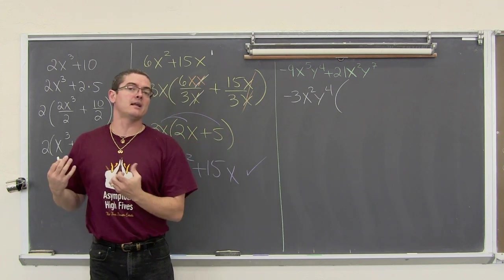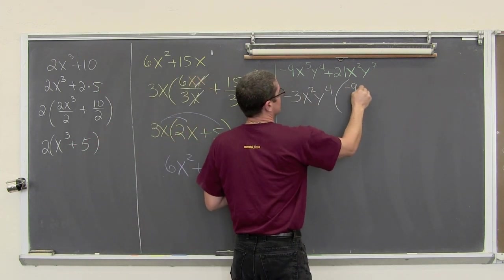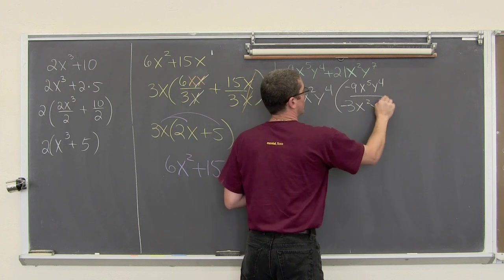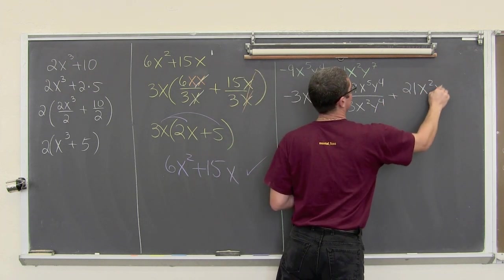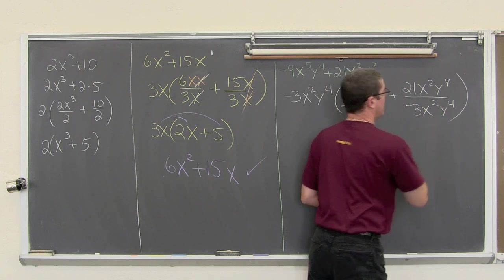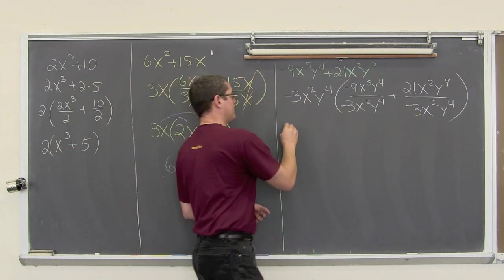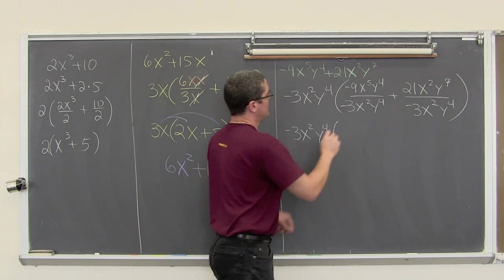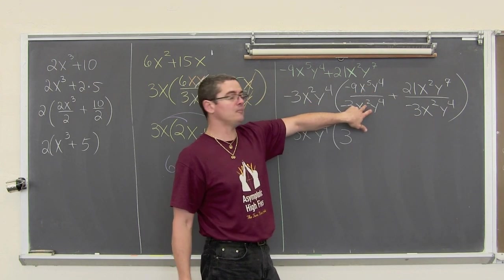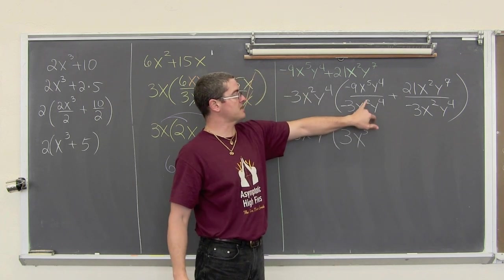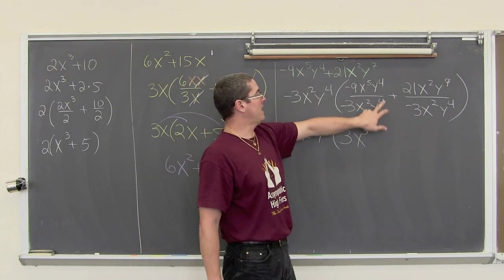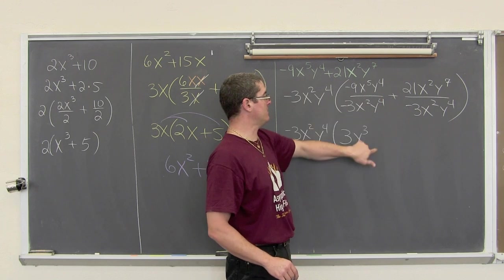And again, we are undistributing or dividing out these GCFs. So, we got negative 9 x to the 5th, y to the 4th, over negative 3x squared, y to the 4th, plus 21x squared, y to the 7th, and we are going to divide that by negative 3x squared, y to the 4th. So, we have negative 3x squared, y to the 4th, negative 9 divided by negative 3 is 3. We have 5 x's, and we are taking 2 of those out, so that is going to leave us with 3. Again, 2 of these x's in the denominator are going to cancel out with 2 of those x's in the numerator, and there is 5 up there, so you are going to be left with 3. And anything divided by itself is equal to 1, so this is going to just cancel out, and we have 3x cubed.